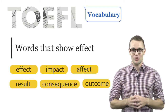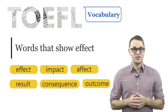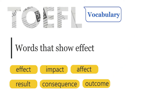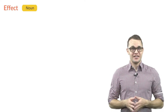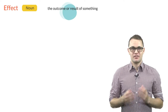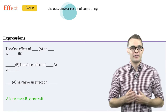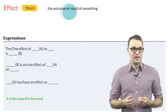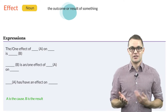In addition we will show you useful patterns and expressions used with these words. If you haven't checked our last video on cause before, make sure you watch that video as well. So let's get started with effect. An effect simply is the outcome or result of something. The following patterns and expressions are commonly used with the noun effect: one effect of A on something is B, or B is an effect of A on something, or A has an effect on something.